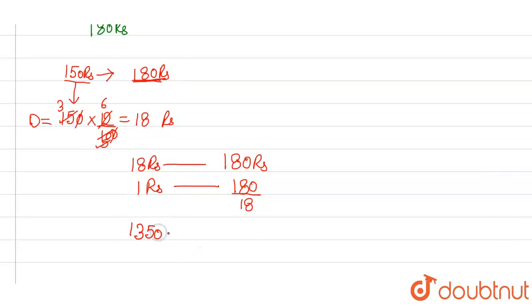So 1,350 rupees dividend will be earned by investing 180 divided by 18 times 1,350.